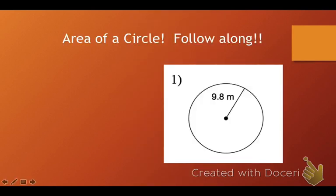Area of a circle. Follow along. So, first things first, we write the formula. So, A equals pi R squared. So, if you remember, R stands for the radius. And right here, radius is half the length of the circle. And right now, we just see half the length of the circle. So, 9.8 is our radius.